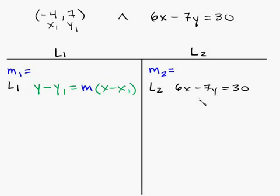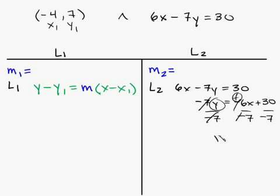So what you want to do is isolate the y. First, we'll move the 6x to the other side by subtracting it. So we get negative 7y is equal to, and write the x term first, negative 6x plus 30. Then you divide by negative 7, and that cancels with this, and you're left with the y, and these cancel positively. And you're left with y is equal to positive 6 sevenths x minus 30 over 7.